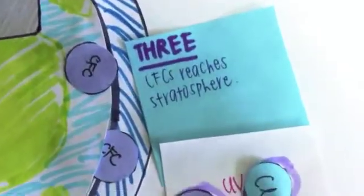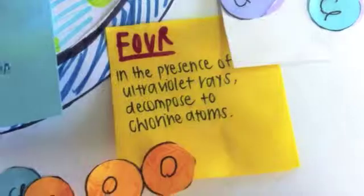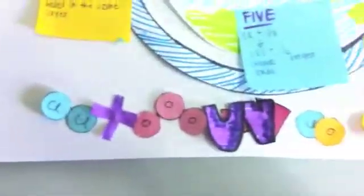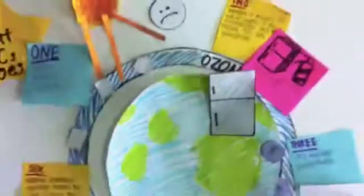Third, CFCs reach the ozone layer. Fourth, in the presence of UV rays, CFC molecules decompose into chlorine atoms. Fifth, chlorine and ozone molecules react to form chlorine oxide and oxygen. Sixth, holes are formed when UV rays reach the earth.